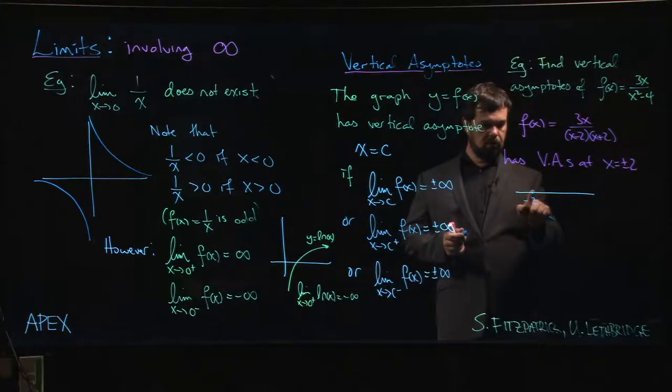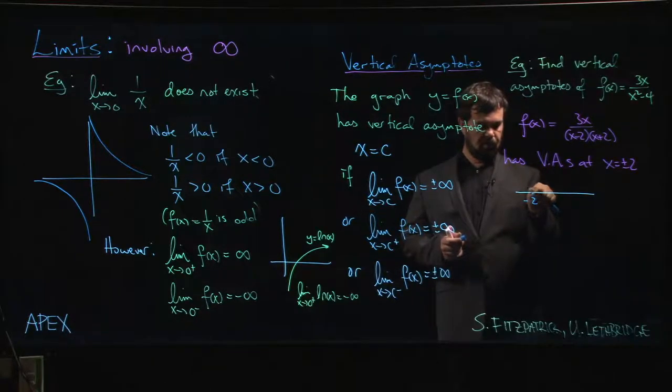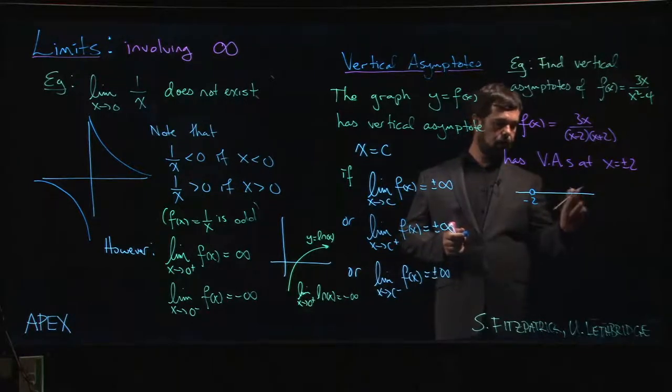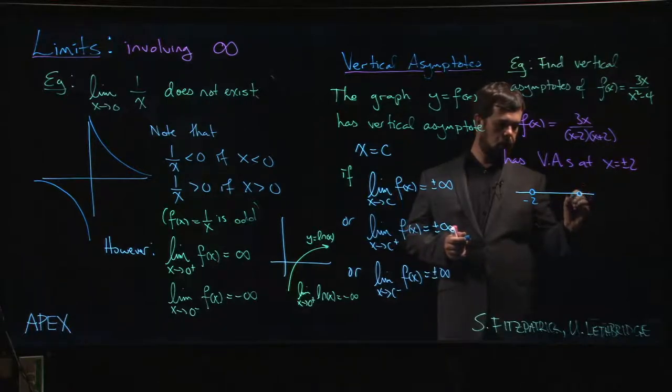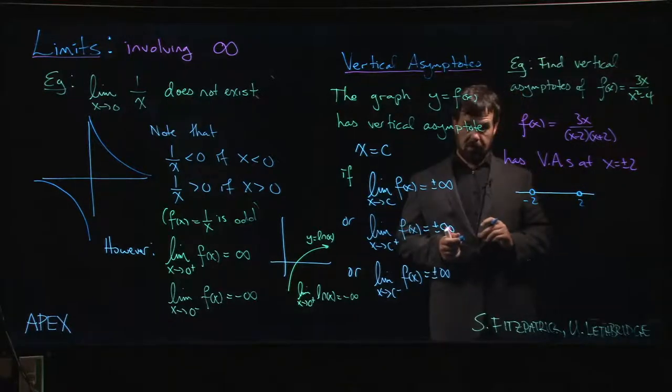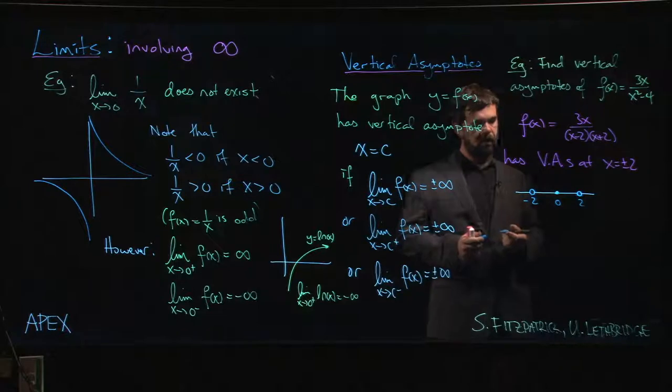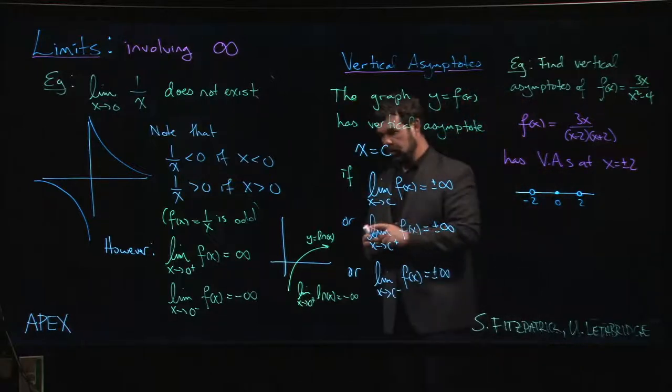Now one thing you might want to do when you're writing these diagrams to keep track of asymptotes versus zeros, give yourself a hollow dot for any zero that occurs in the denominator. Give yourself a solid dot for a zero that occurs in the numerator.